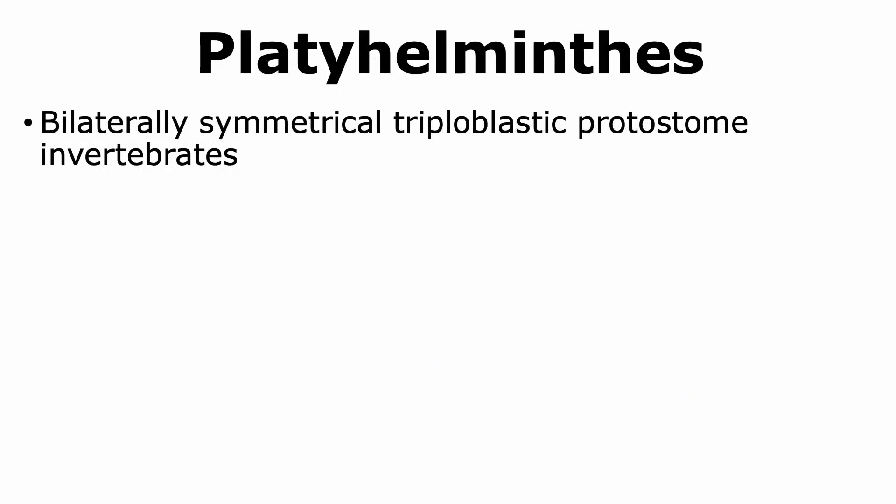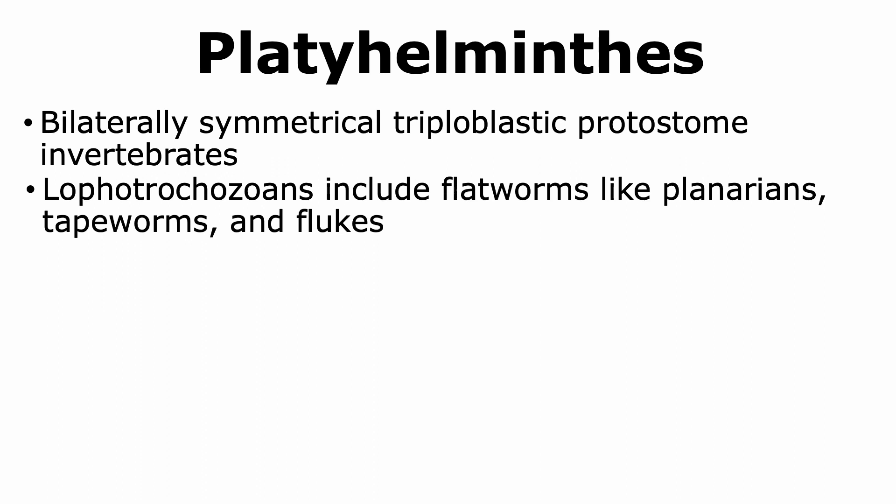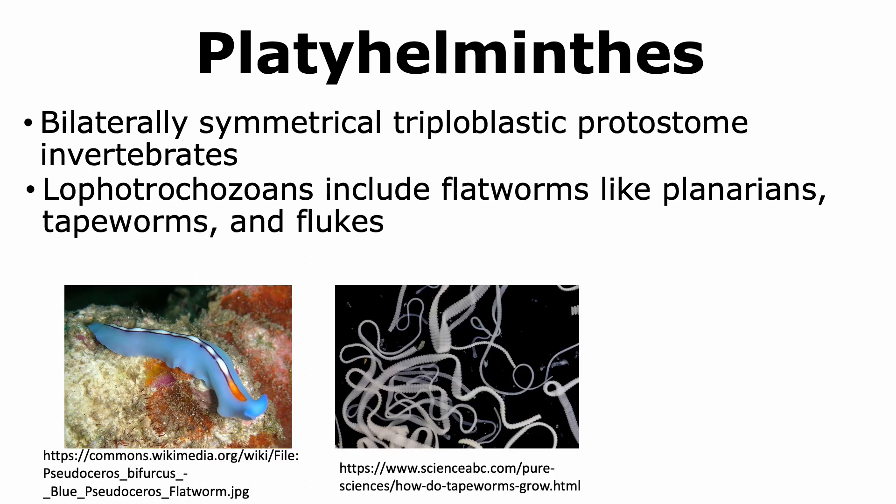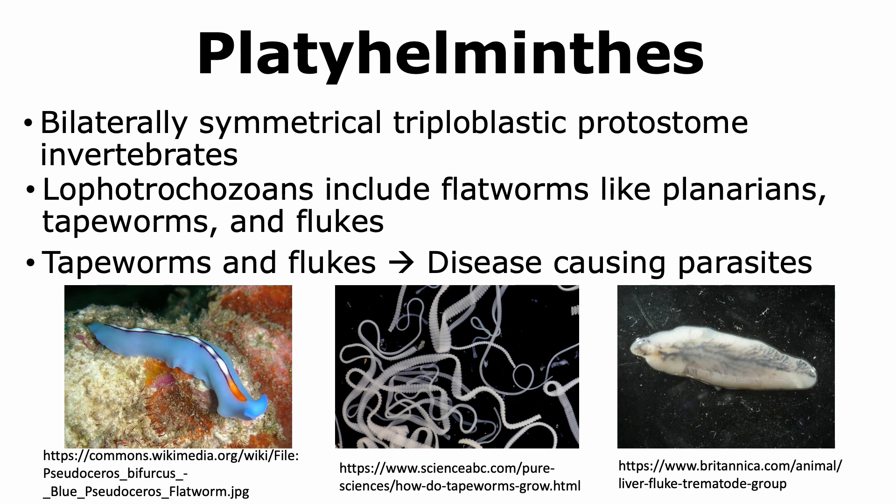The phylum Platyhelminthes includes bilaterally symmetrical, triploblastic organisms that are protostomes. During development, they form three germ layers: the ectoderm, mesoderm, and endoderm. When the blastopore is formed, it becomes the mouth of the organism, making them protostomes. Platyhelminthes include flatworms like planarians, tapeworms, and flukes. Tapeworms and flukes are known to cause diseases, and hence they are important organisms to learn about.